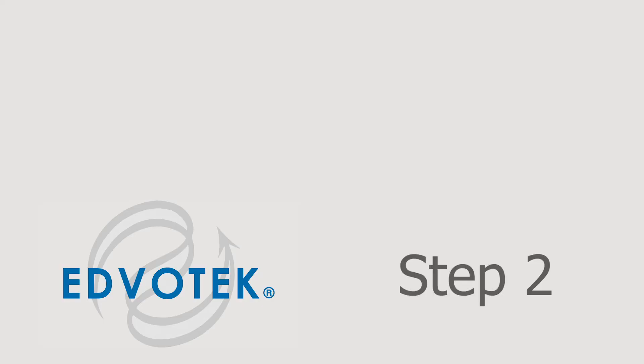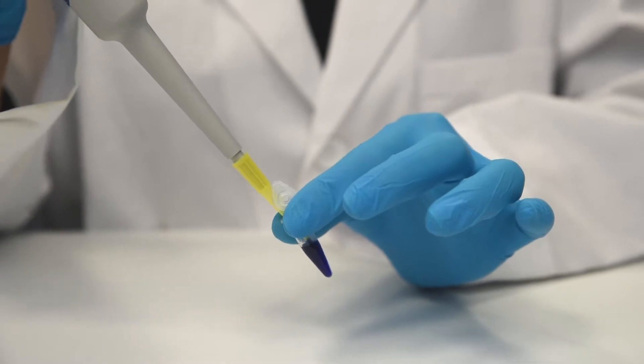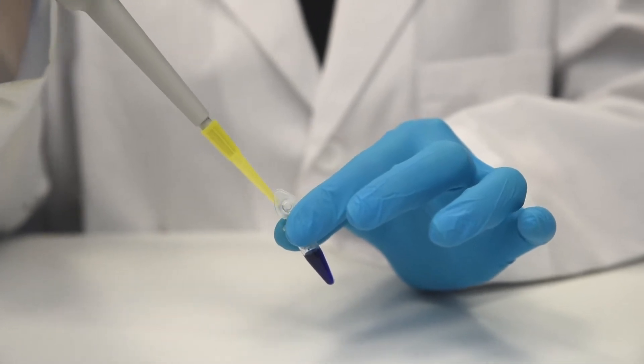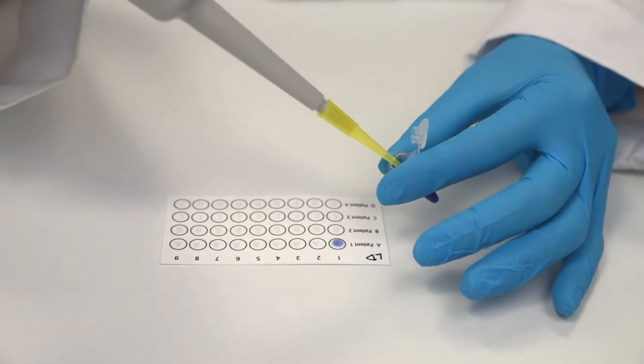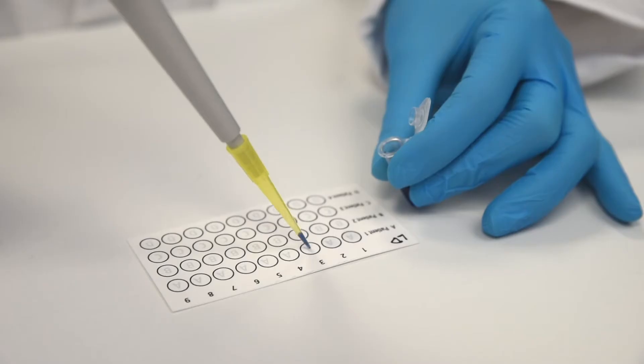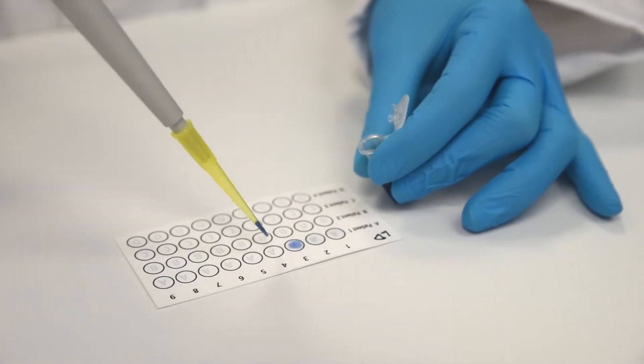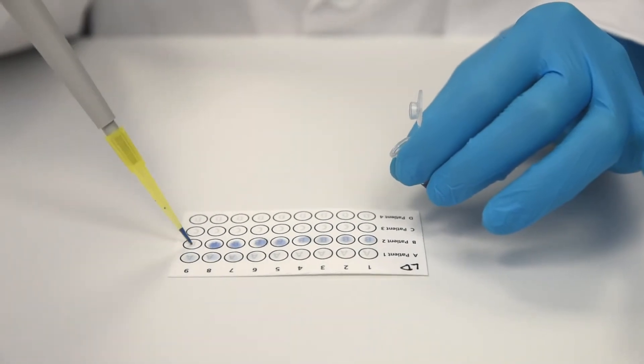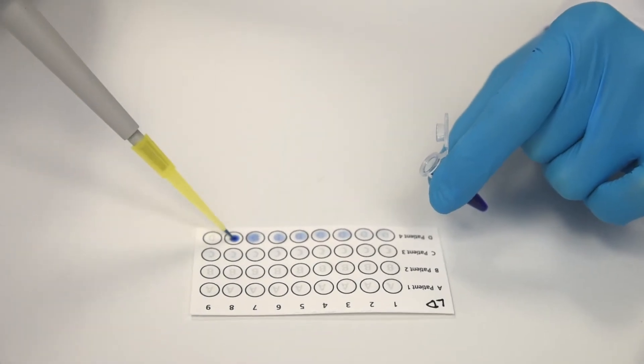Step 2. Using a micropipette, apply 5 microliters of equilibration buffer (EB) to each spot on the microarray card. The same micropipette tip can be used to add equilibration buffer to each spot on the entire card.